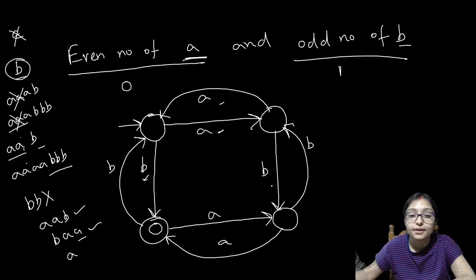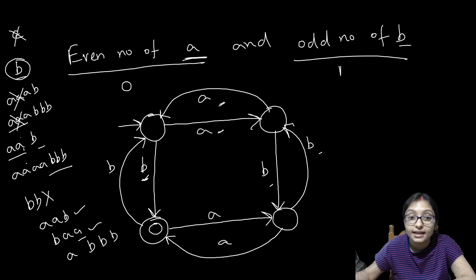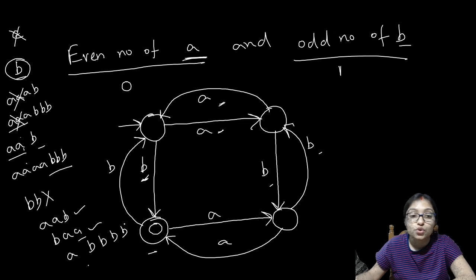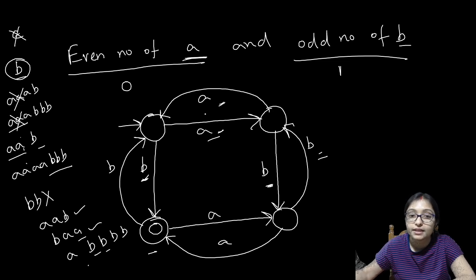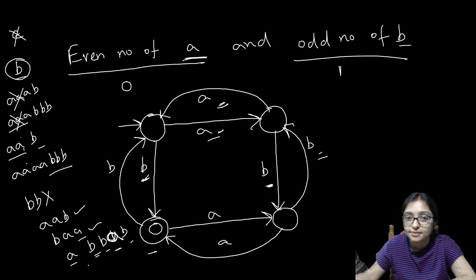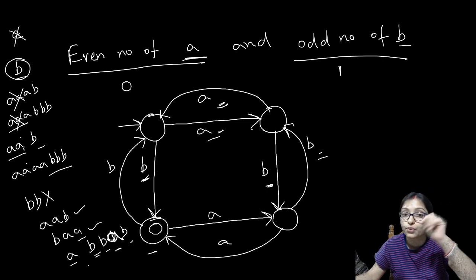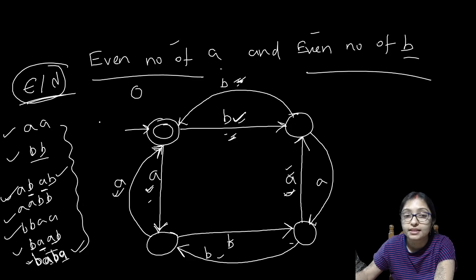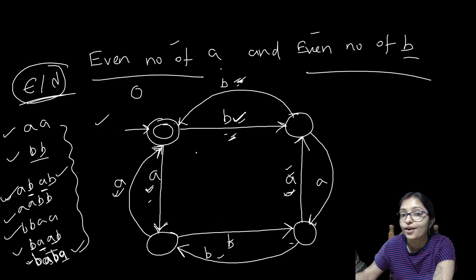From that state, another B can come, so it is B, then B. And again from here if another B comes it goes back. Meaning A then B then another B then another A then another B — only then it is accepted. So when number of A is even and number of B is odd, all those strings are accepted. Now you can compare this with the previous diagram — they are actually the same, only the final state is changed.